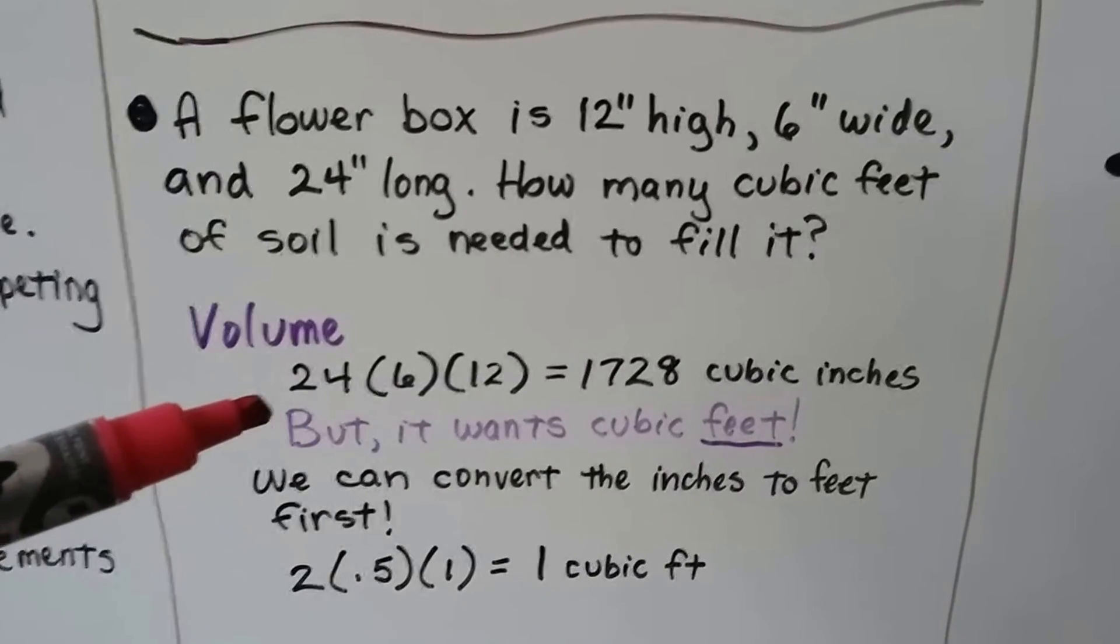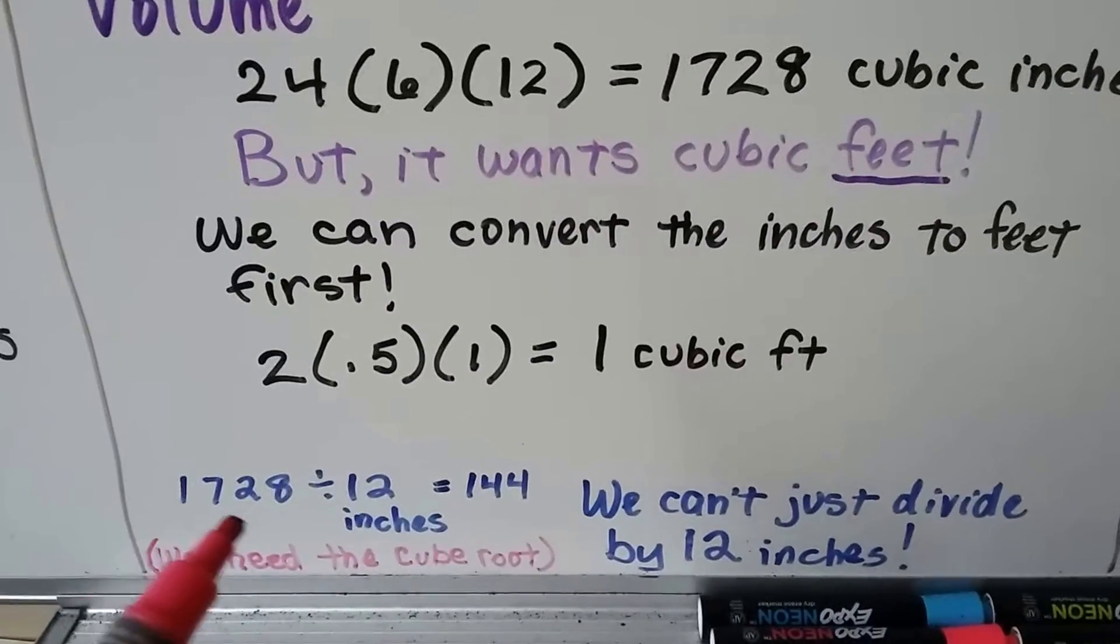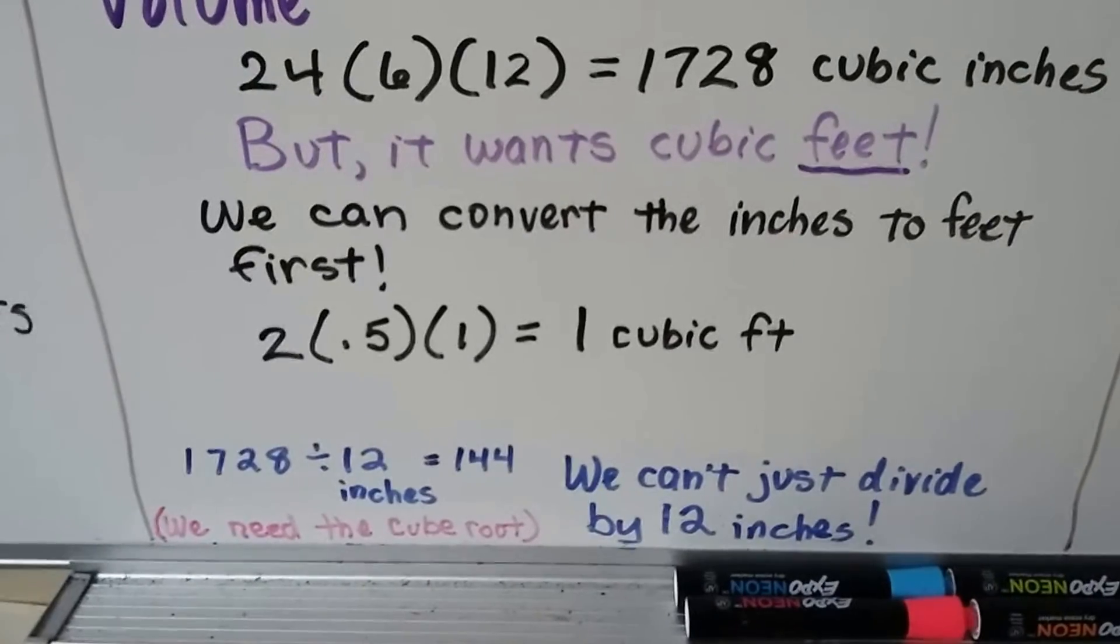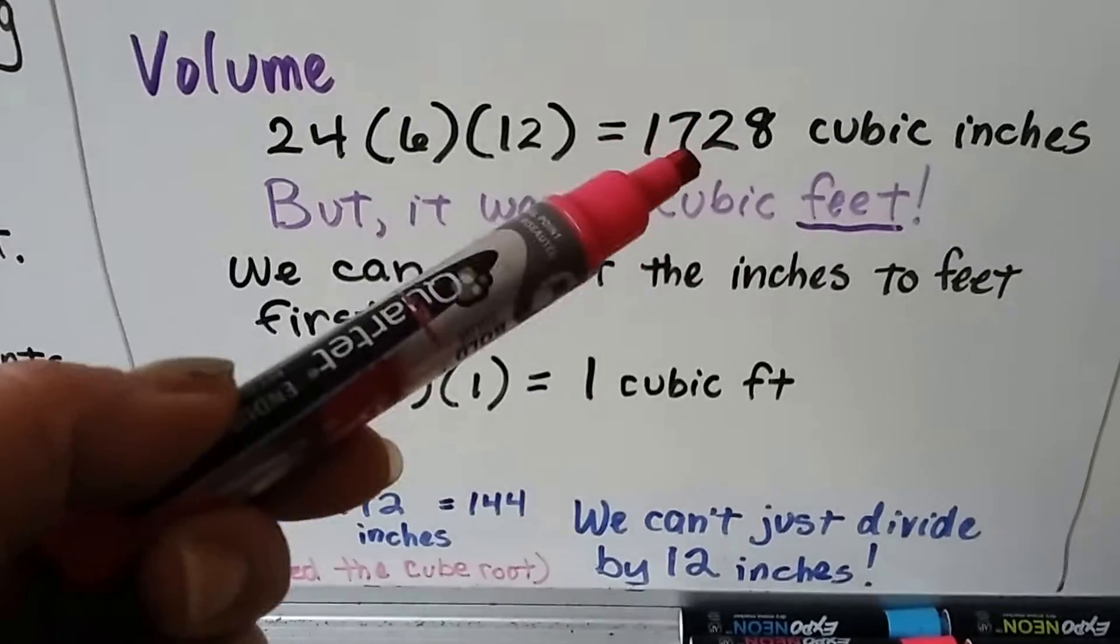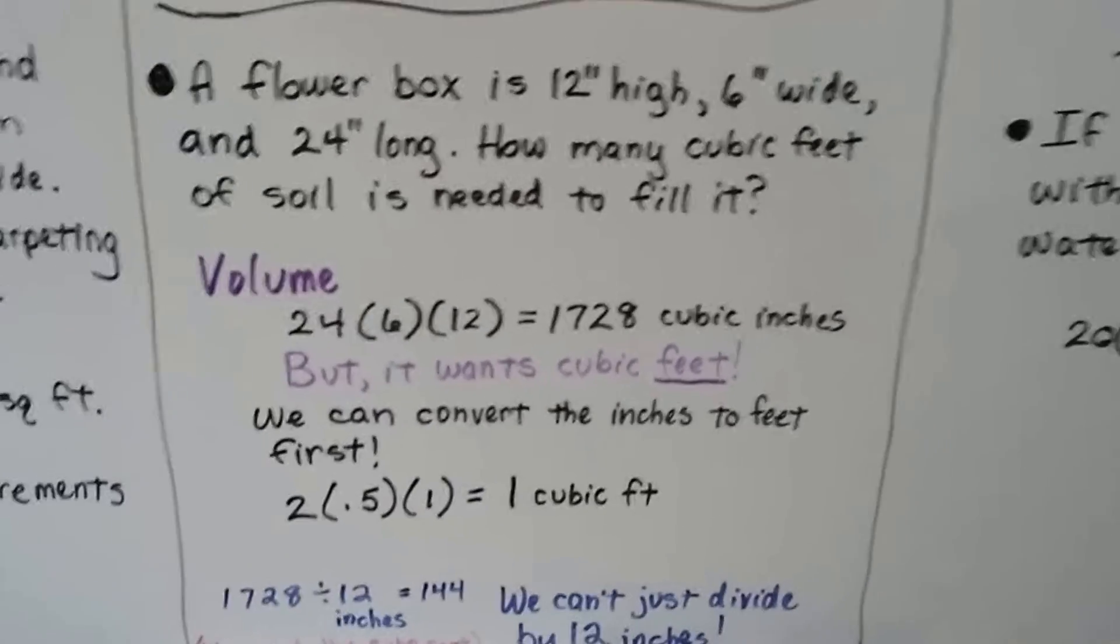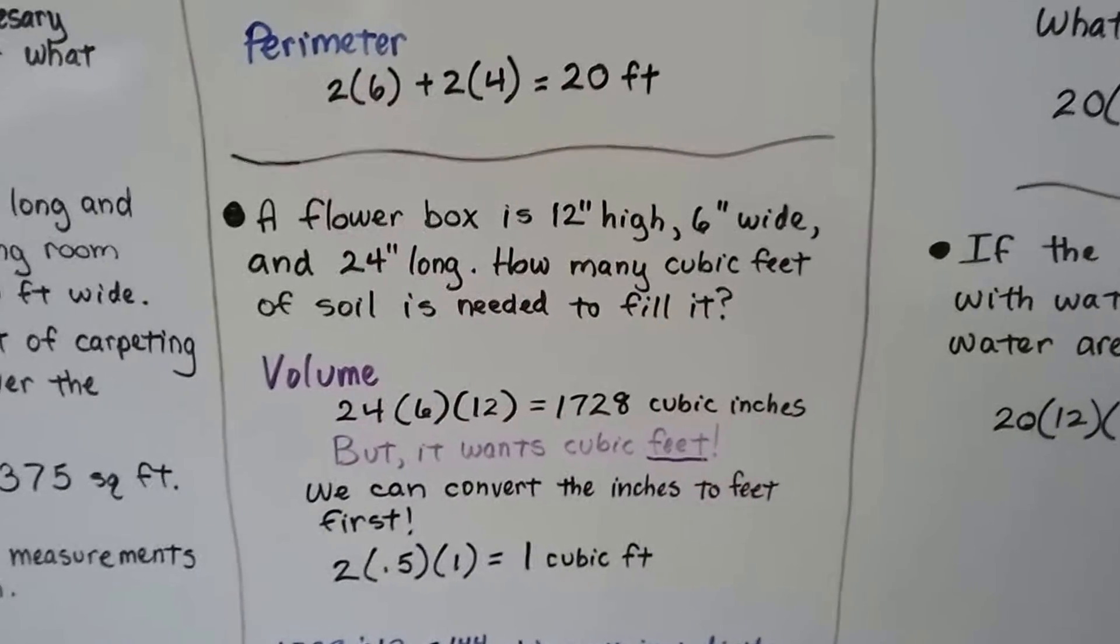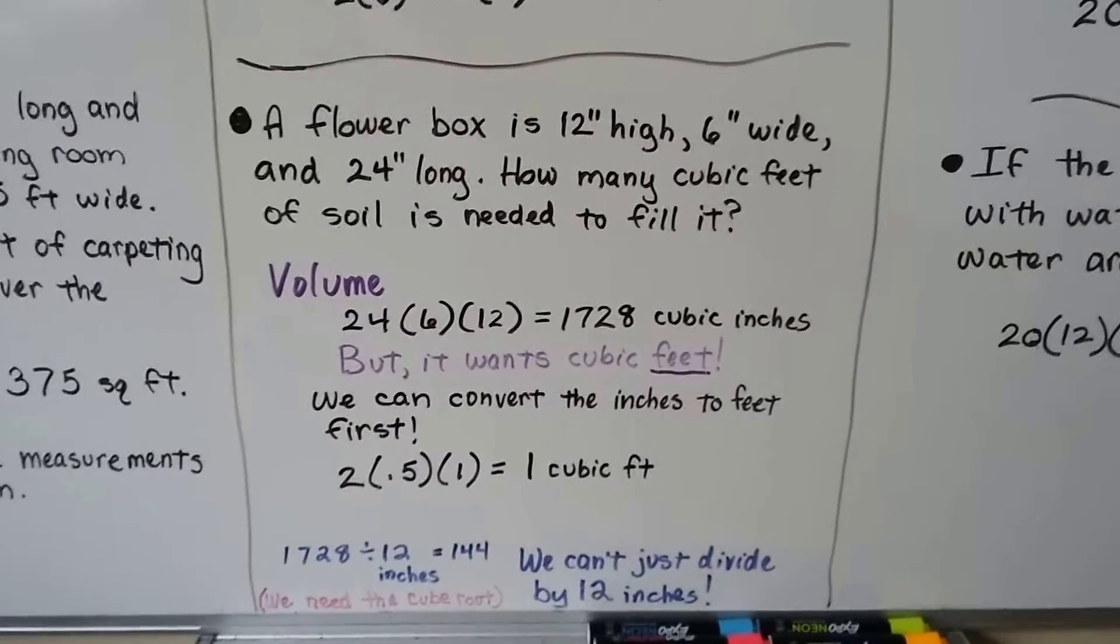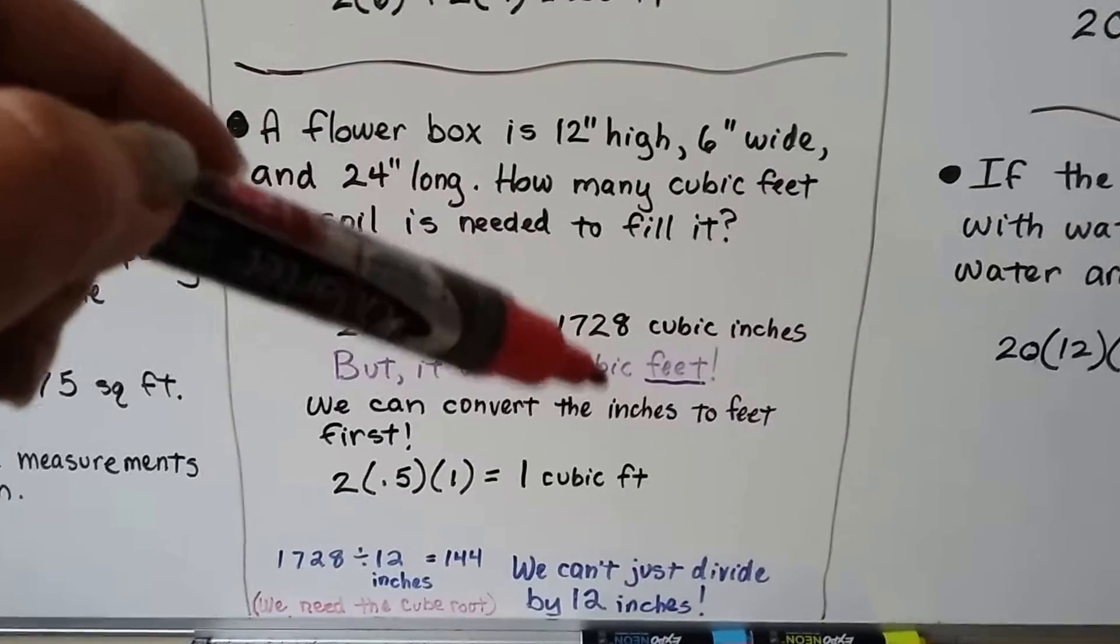Now we could do it this way, where we get 1,728 cubic inches. The problem is you can't just do 1,728 divided by 12, because that's going to give us 144. You actually need the cube root for this number. We're going to get into that later on when we cover algebra. And there'll be a link in this description for my Algebra 1 video, 11.3c for cube roots. So if you really want to know about that, it'll tell you how to take a big number like this and how to cube it.